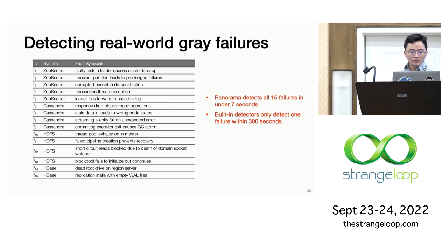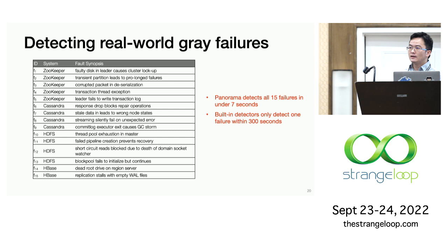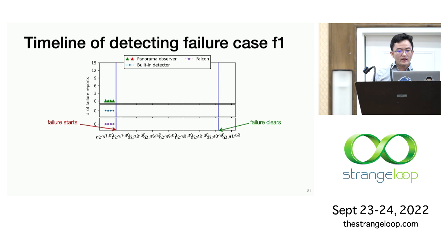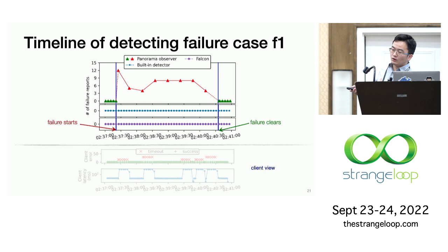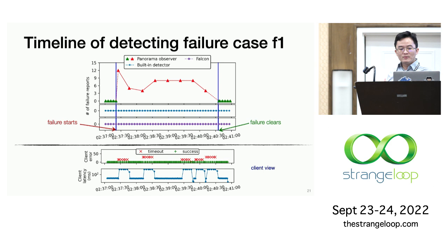We applied our tool to large-scale distributed systems including HDFS and ZooKeeper, and reproduced 15 real-world gray failure cases. The overall result is that Panorama can detect all 15 failures in under 7 seconds, while the built-in detectors can only detect one case in around 5 minutes. This graph shows the timeline of what happens in the first failure case. We can see that the Panorama observer starts to report failures soon after the failure occurs and stops reporting when the failure clears. The lower graph shows the client's latency and errors, and we can see that Panorama's reporting closely matches the client's experience.